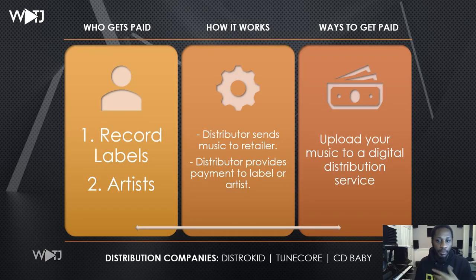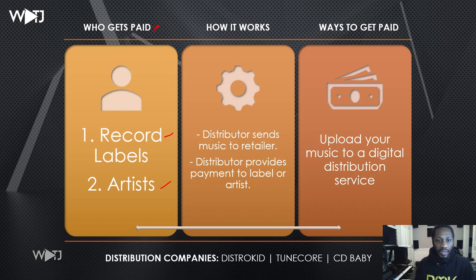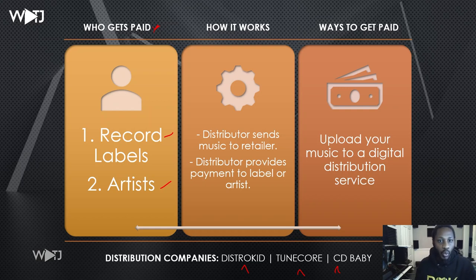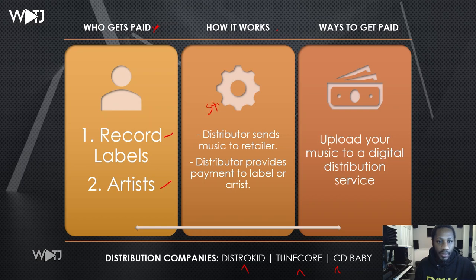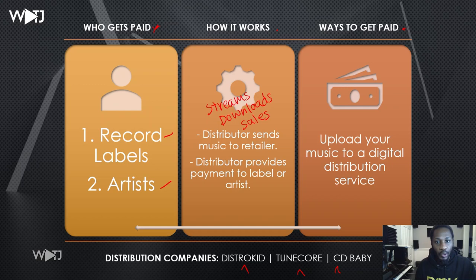Now let's break down distribution companies. When thinking about how to get paid, you want to look at who gets paid first when working with a distribution company. For the most part, it's going to be the record labels or the artist working directly with the distribution company. Some examples are DistroKid, TuneCore, and CD Baby. The distributor sends music to the retailer, and then provides payment to the label or the artist. This comes from streams, downloads, and other types of sales. You upload your music to a digital distribution service and then promote it.